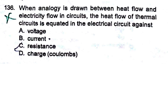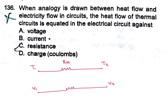Question: When analogy is drawn between heat flow and electricity flow in circuits, the heat flow of thermal circuits is equated in the electrical circuit against what? For thermal circuit, temperature T1 and T2, with thermal resistance. For electrical circuit, voltage V1 and V2, with resistance R. Heat flow Q is equated against current I. So current is the answer.